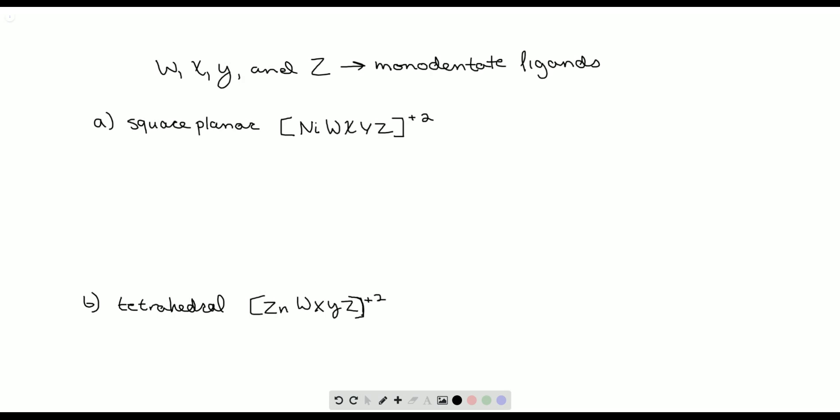We're told that W, X, Y, and Z are different monodentate ligands, meaning they only interact at one coordination domain on the metal. And we're asked how many geometric isomers are there for each ion, and we're given a square planar ion, nickel WXYZ, and a tetrahedral ion, zinc WXYZ.